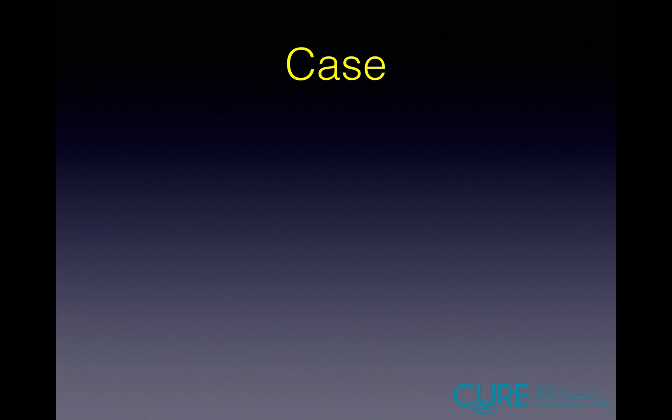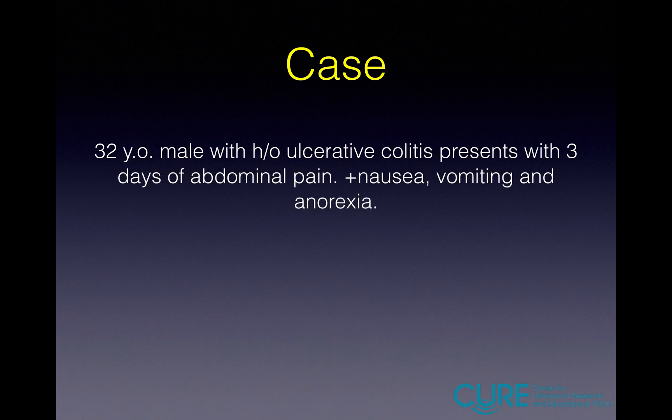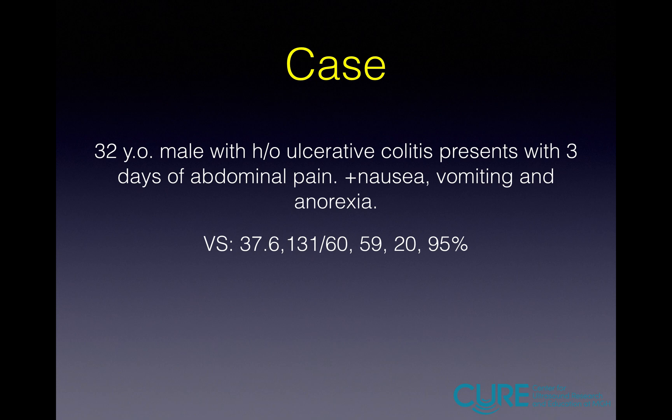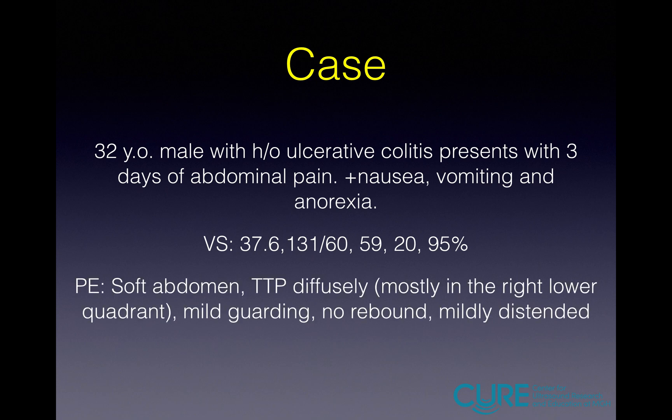The case is of a 32-year-old male with a history of ulcerative colitis who presented with three days of abdominal pain, nausea, vomiting, and anorexia. His vital signs were normal. His physical exam was notable for a soft but mildly distended abdomen. There was some mild guarding, no rebound, and there was tenderness to palpation diffusely, mostly in the right lower quadrant. Andrew, at this point, what were you thinking?